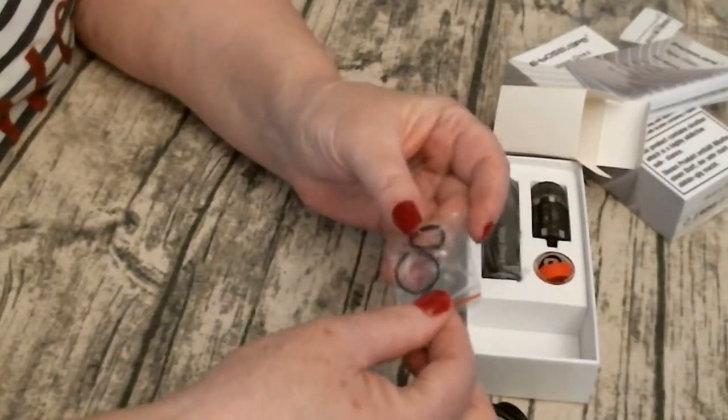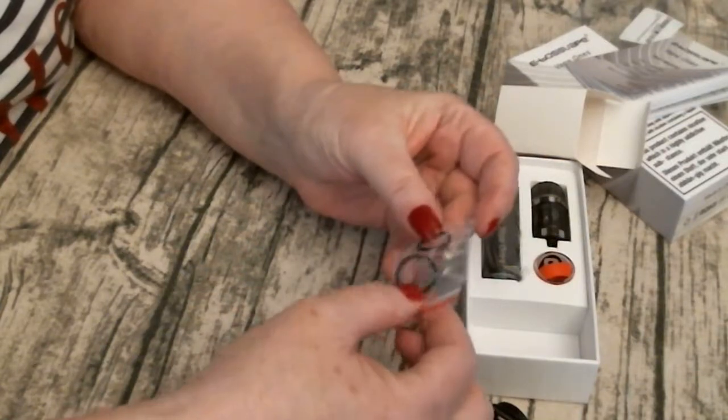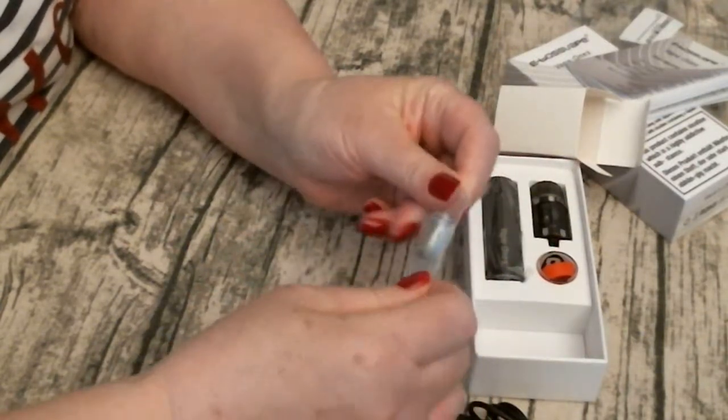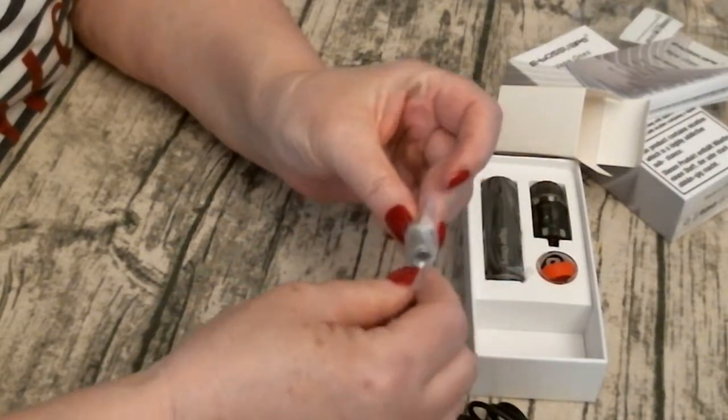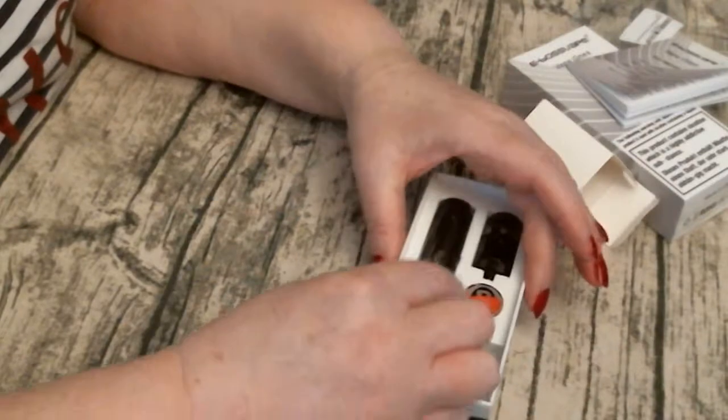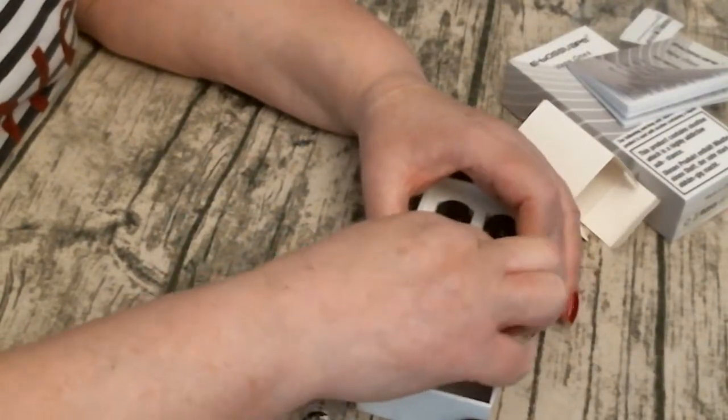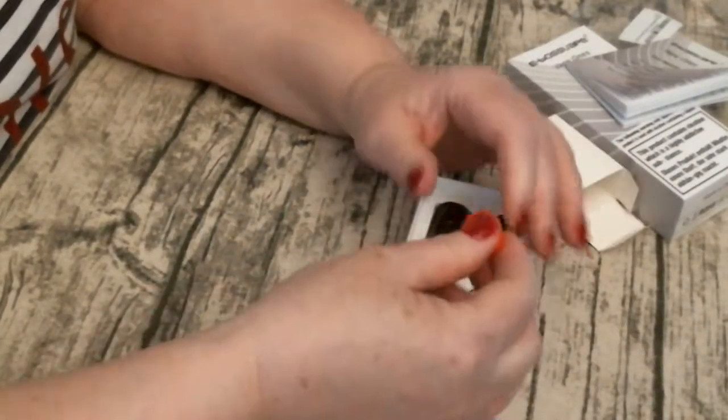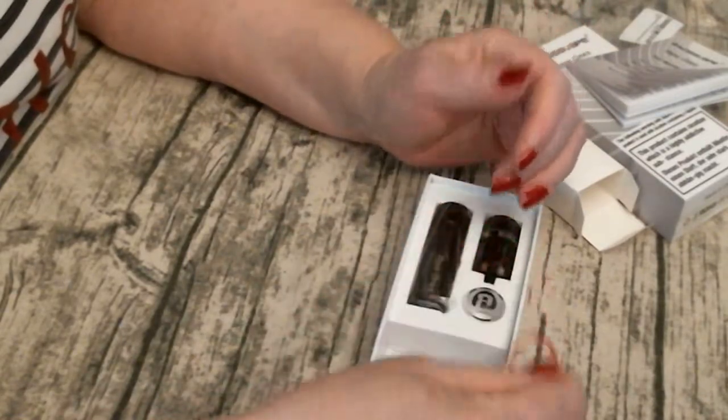You've got a couple of little sort of washer types. Then you've got a different, I think that's a different type. But you've got a few little bits and pieces. You've also got the cap. You've got another little sort of washer there.